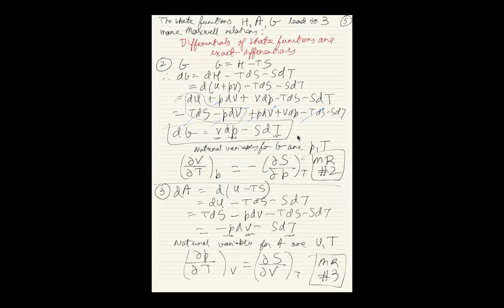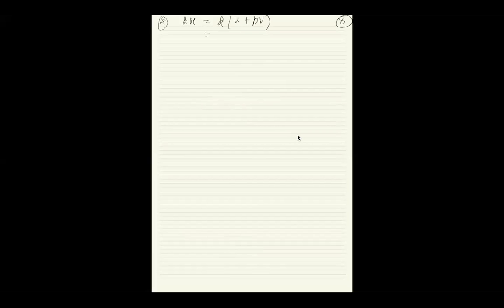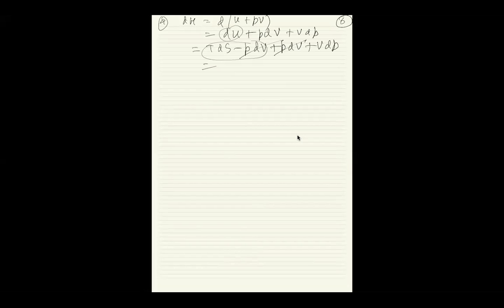The final Maxwell relation comes from enthalpy H. dH = d(U + PV) = dU + PdV + VdP = TdS - PdV + PdV + VdP. The PdV terms cancel, giving dH = TdS + VdP. So the natural variables for H are S and P.